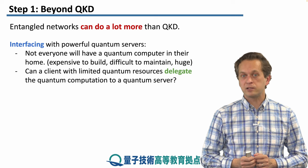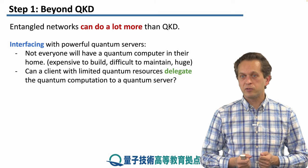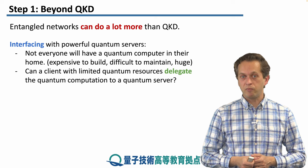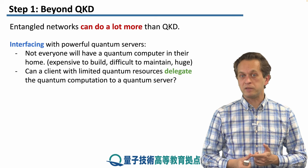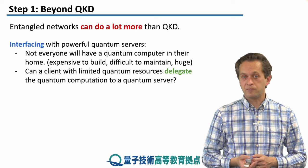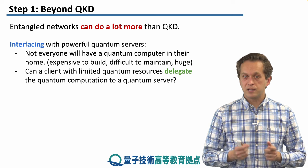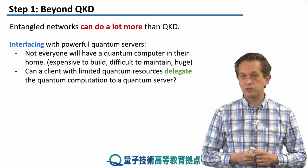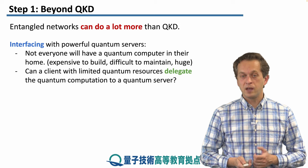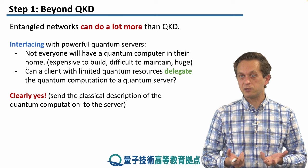In the next two lessons we're also going to think about how we interface with powerful quantum servers. In the near future — and probably the long future too — not everyone will have a quantum computer in their home. They're expensive to build, very difficult to maintain, and they would simply not fit. The question is: can a client with limited quantum resources delegate quantum computation to a quantum server, in the same way we delegate classical computation to a classical server? And the answer is clearly yes — we can simply send the classical description of the quantum computation to the server.